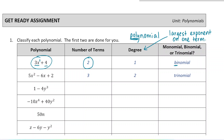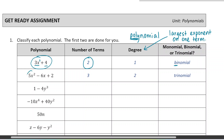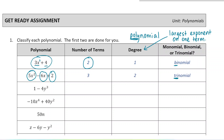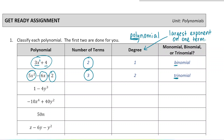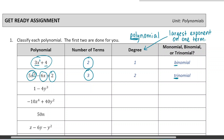Let's have a look at the next polynomial. We can see there are three terms — remember, each term is separated by an addition or a subtraction. So we call this a trinomial because 'tri' means three. And we see the largest exponent here is a 2 — there's an x-squared term — so the degree would be 2.